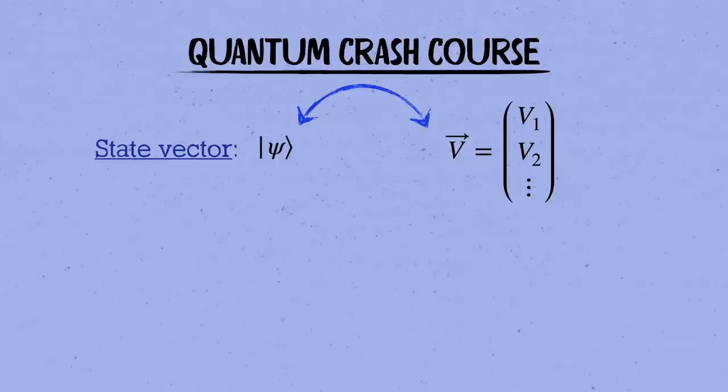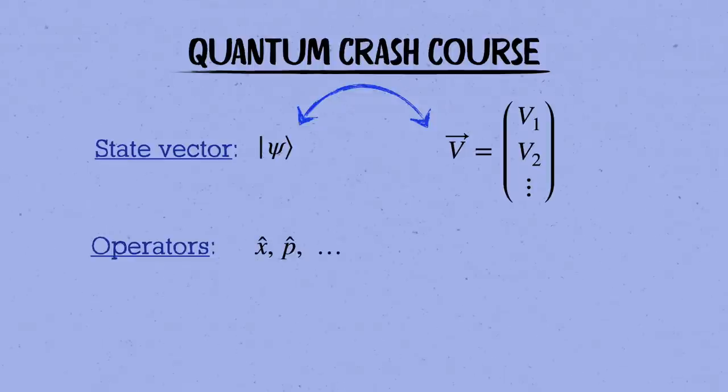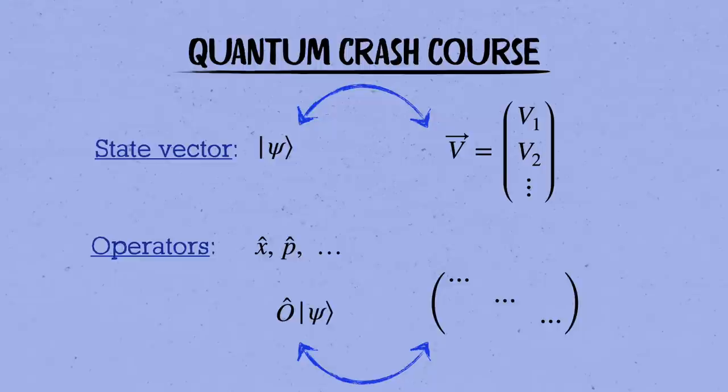The things we measure, like its position or momentum say, correspond to operators that act on the state, x-hat for the position operator and p-hat for the momentum operator, where I'll use a hat symbol to indicate the operator corresponding to a given quantity. Whereas the state psi was analogous to a column vector, an operator is analogous to a matrix. It acts on a state and gives you a new state, similar to how a matrix can multiply a column vector and give you another vector.